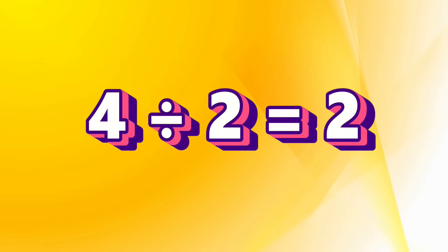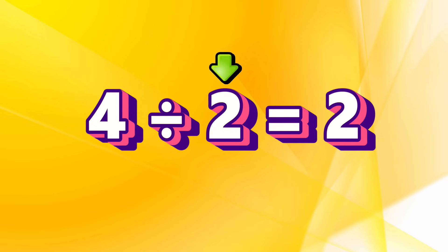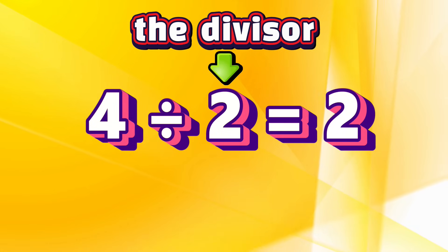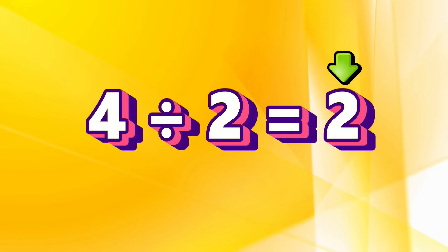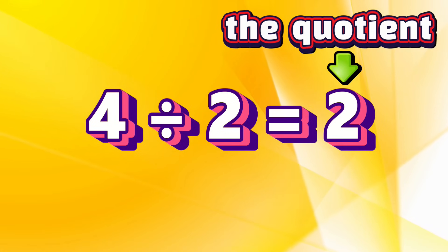Four divided by two equals two. This four — the total number of pairs — is called the dividend. The dividend is the total number you are splitting up. This number two is the divisor. The divisor is the number of groups you are splitting the dividend into. In this case, it's two because Michael and Liam are splitting the four pairs. And this number two is the answer — the quotient. The answer to a division problem is called the quotient.